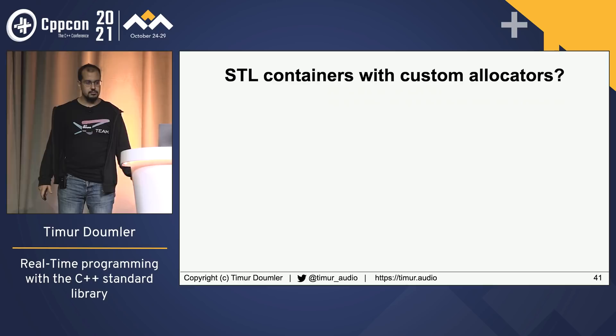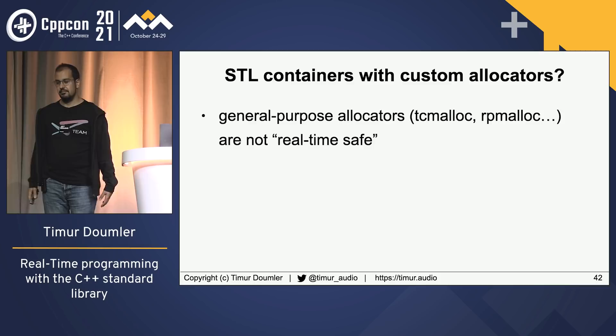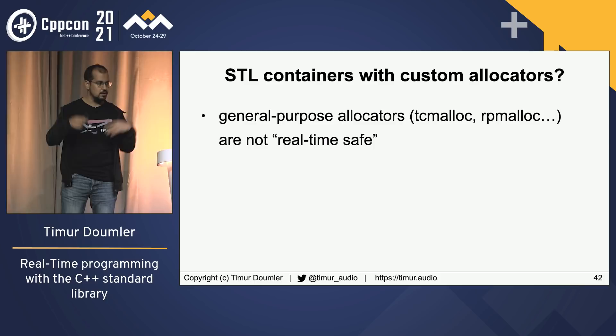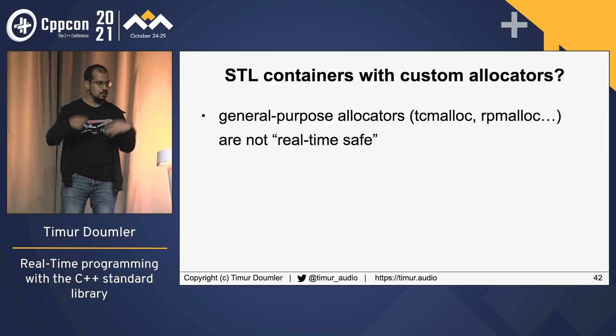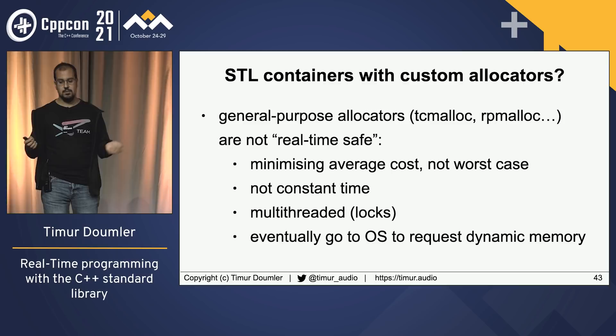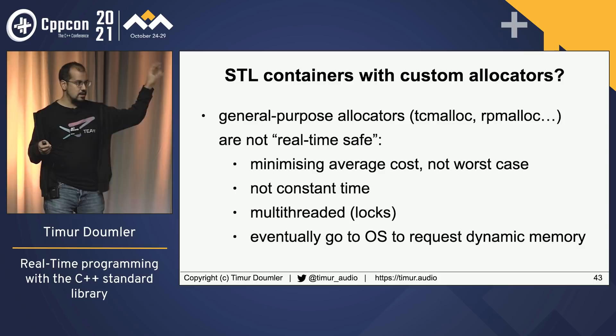You could use STL containers with custom allocators. General-purpose allocators like TCMalloc or rpmalloc are not really real-time safe — they're designed to make allocations cheaper on average, not minimize the worst case. They're typically not constant-time, they're multi-threaded so they have locks inside, and they all eventually go to the OS to request more dynamic memory. That's not something we can do on a real-time thread. What we need is an allocator that allocates memory in constant time, single-threaded with no locks, and only uses memory we allocated up front.